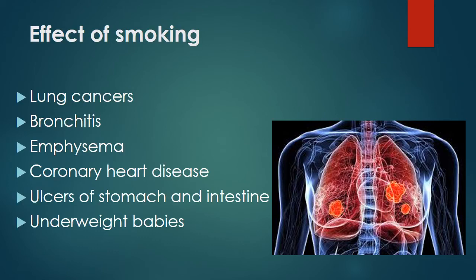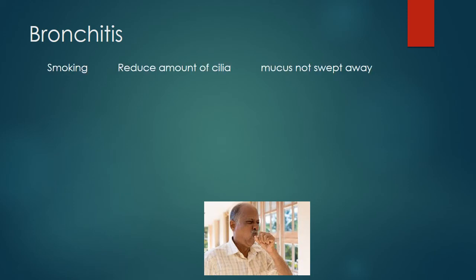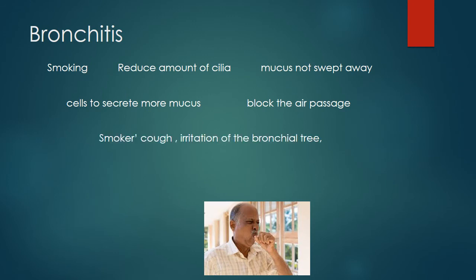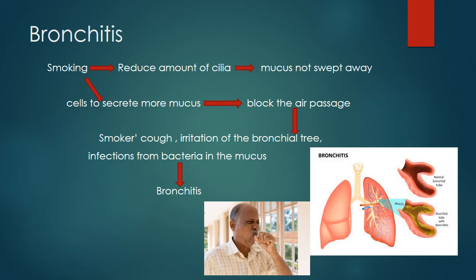Now let's look at the effects of smoking on the respiratory system. Due to smoking, there are many health effects including lung cancer, bronchitis, emphysema, coronary heart disease, ulcers of the stomach and intestine, and underweight babies. Regarding bronchitis: smoking reduces the number of cilia, so mucus is not swept away from the air passages. Smoking also causes cells to secrete more mucus, blocking the air passages. This leads to smoker's cough, irritation of the bronchi, and bacterial infections in the mucus — ultimately causing bronchitis.